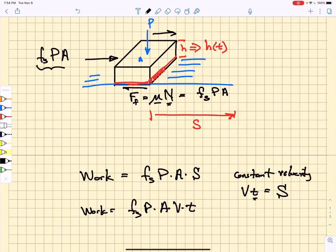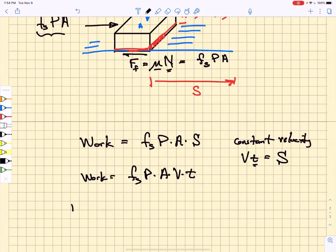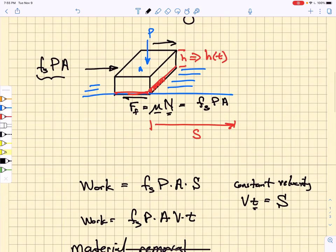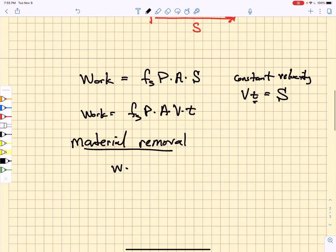The material removal—you can think of this as a grinding or a polishing operation. If we remove a depth of material equal to w, then w times A is the volume of material removed.